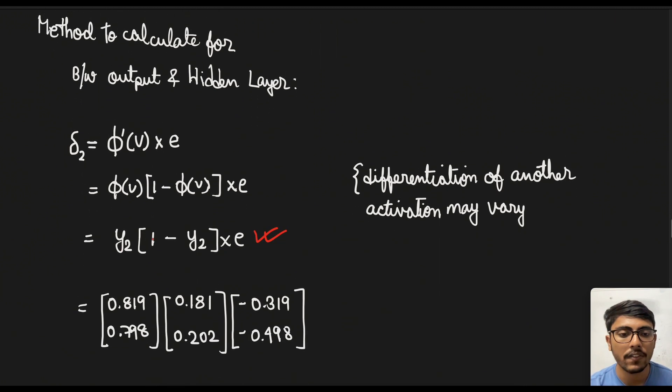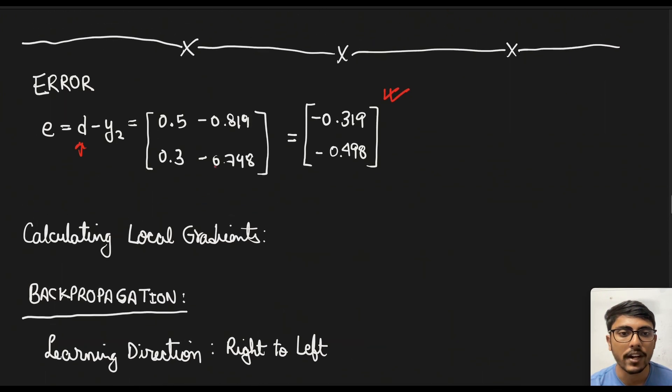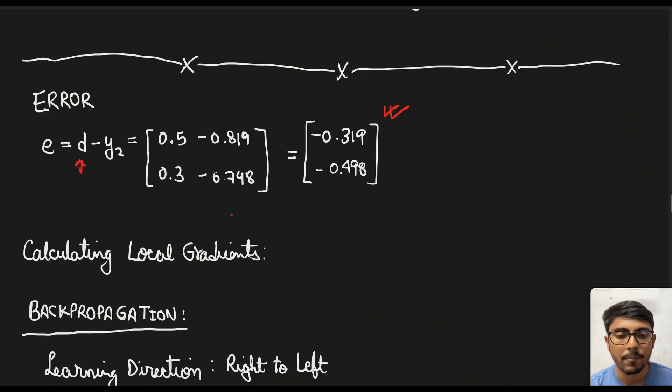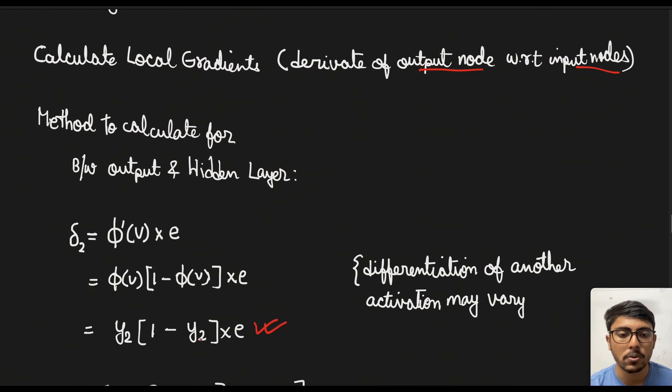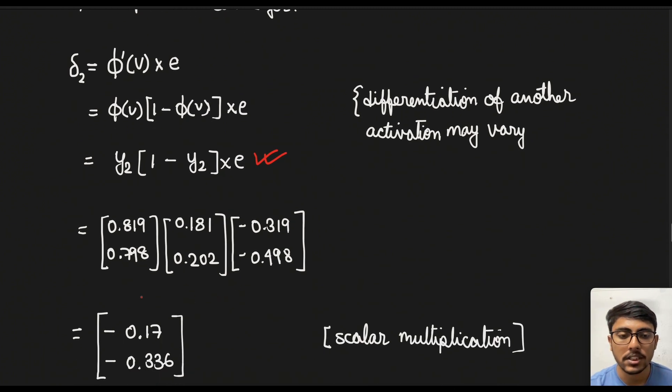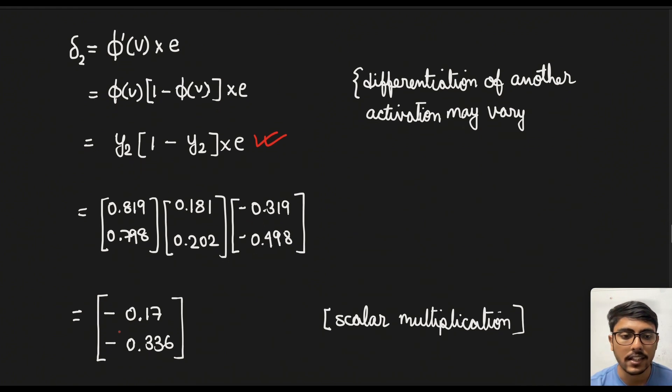So since this is equal to y2 we just simply substitute the value here. So in this case we will get these two matrices. Just simply put the value of y2 from here. This and 1 minus y2 into e we get this. Now we need to multiply them in a scalar fashion. This means 0.819 × 0.181 × (-0.319) and this gives us -0.17.